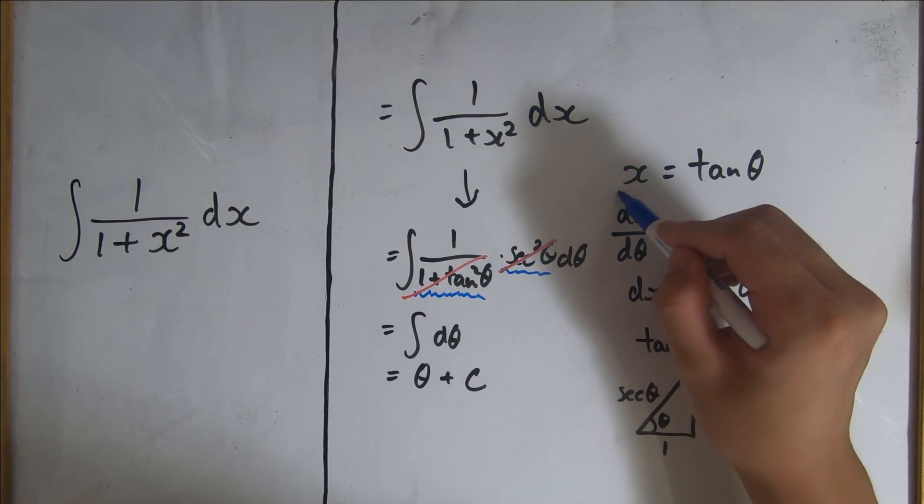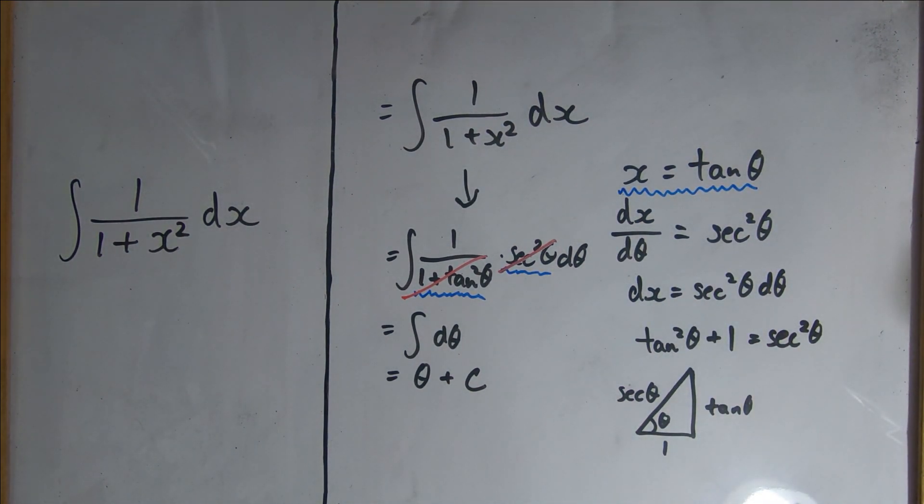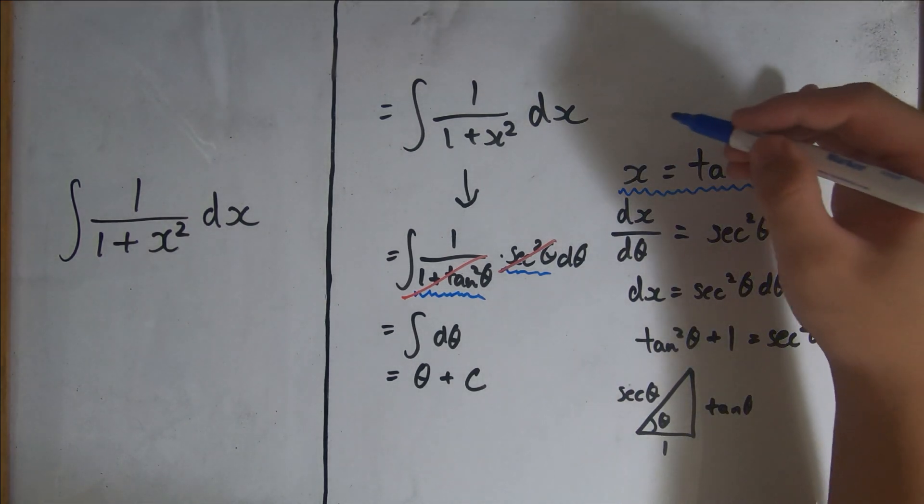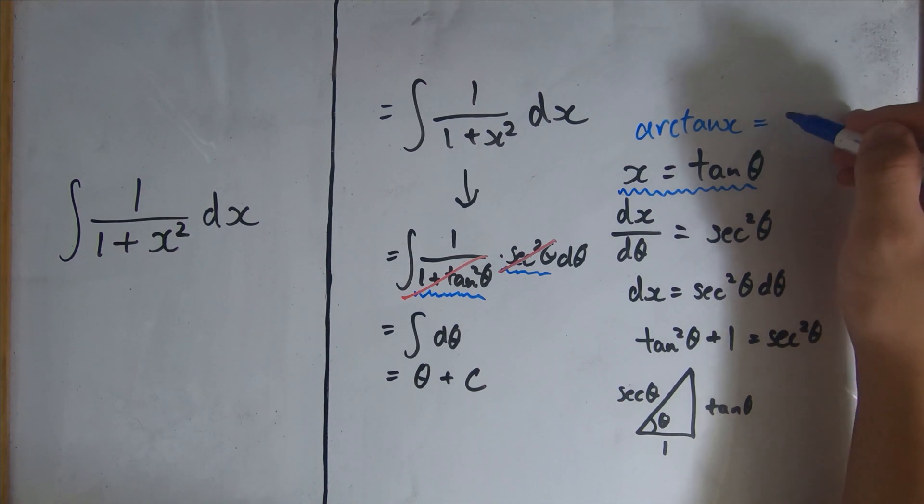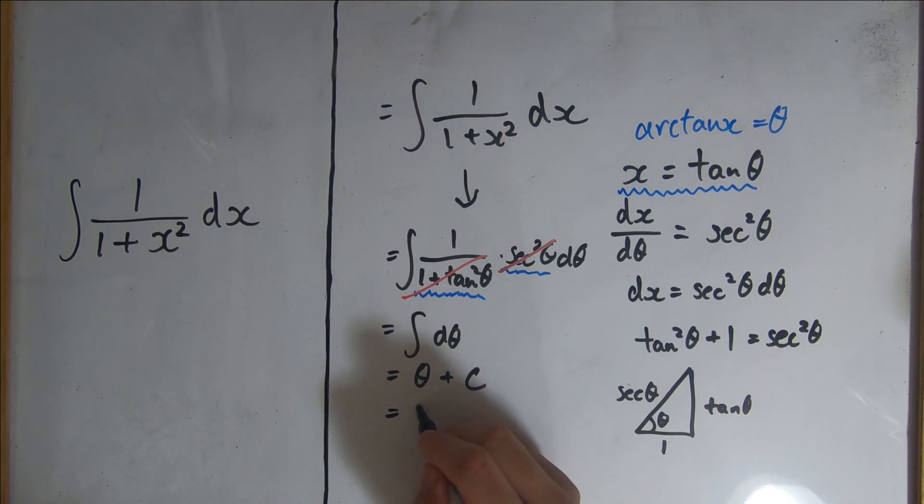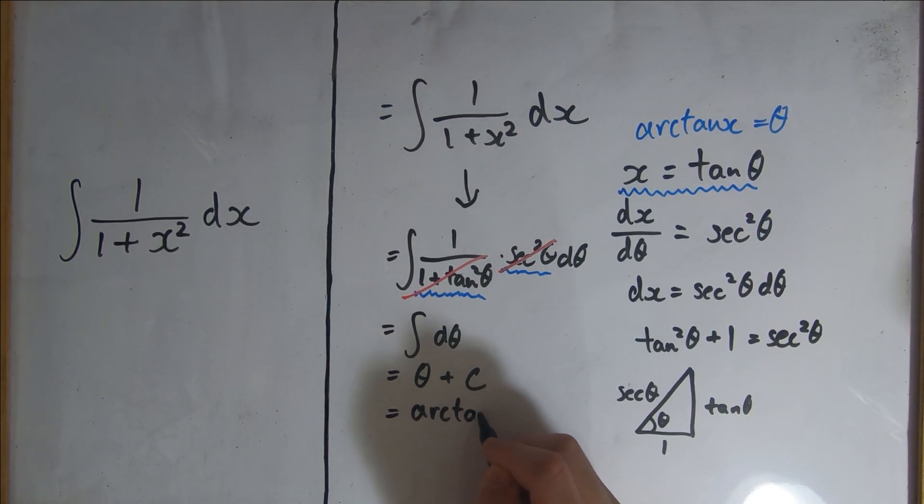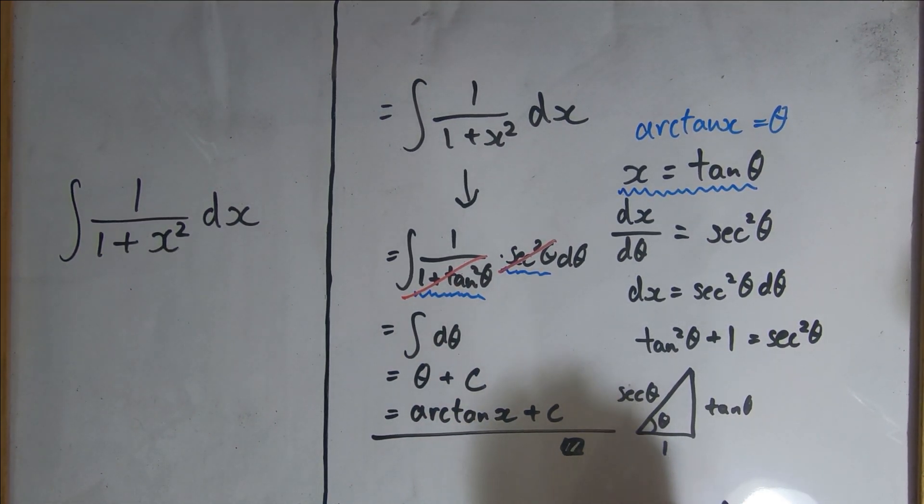We also know from this equation that if we take the arc tangent on both sides, we get the arc tangent of x equals theta. So substituting that in for theta, we get that this integral is equal to the arc tangent of x plus c. And that's all for today. Thanks for watching.